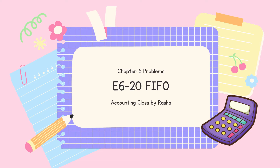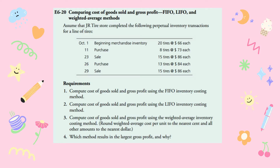Hello, we're going to do Chapter 6, which talks about perpetual inventory records using FIFO, LIFO, and weighted average. In this video, I'm going to talk about the FIFO method, which is first in, first out.